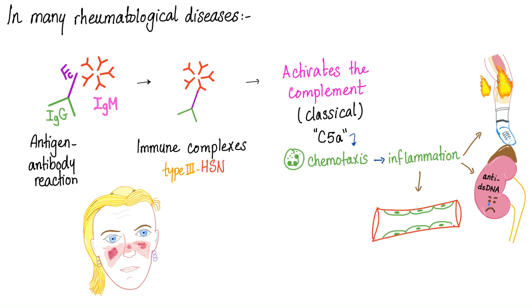In many rheumatological diseases, you start with an antigen-antibody reaction, form an immune complex. They activate complement, the classical pathway. C5a for chemotaxis, inflammation. We have arthritis, nephritis, vasculitis.